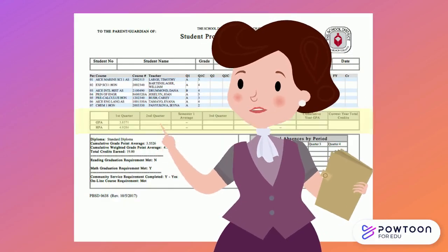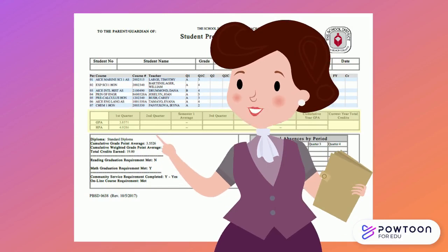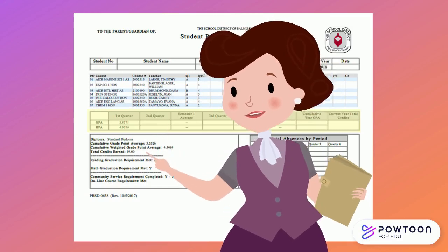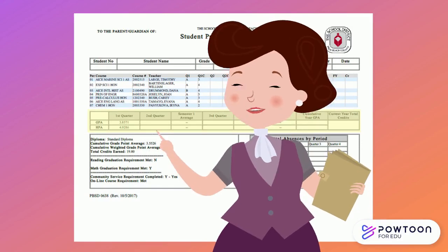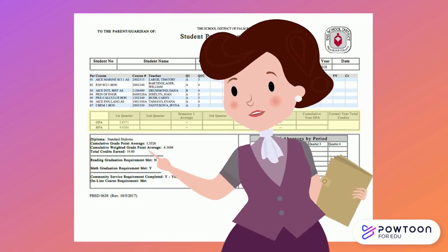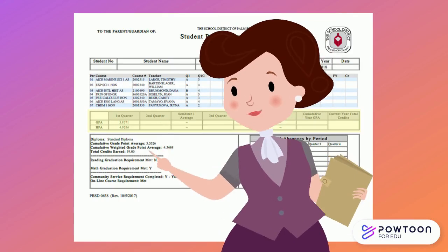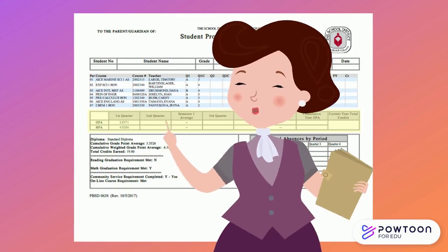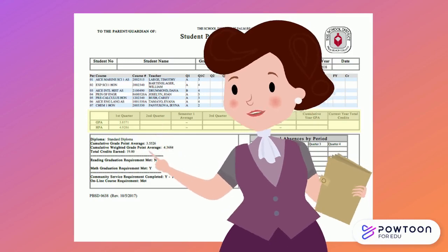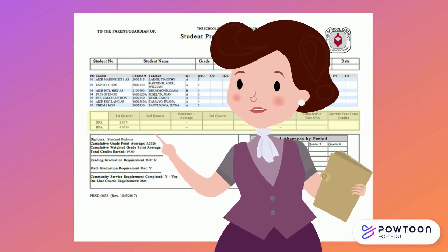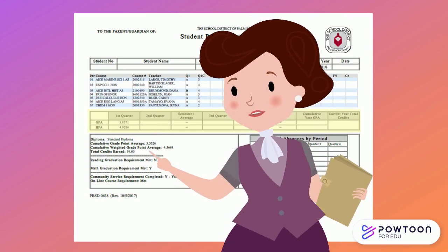Below the course list you will see a table with GPA and HPA. For this report card, the only numbers listed in this table are the first quarter GPA and HPA. This is the average of only your first quarter grades, which helps you see the trend of your current quarter grades. However, it is not your cumulative GPA. When we are talking about high school graduation or college admission, we are referring to your cumulative GPA. The quarter GPA can help you see how you did this nine weeks, but other than that you will largely ignore this box.